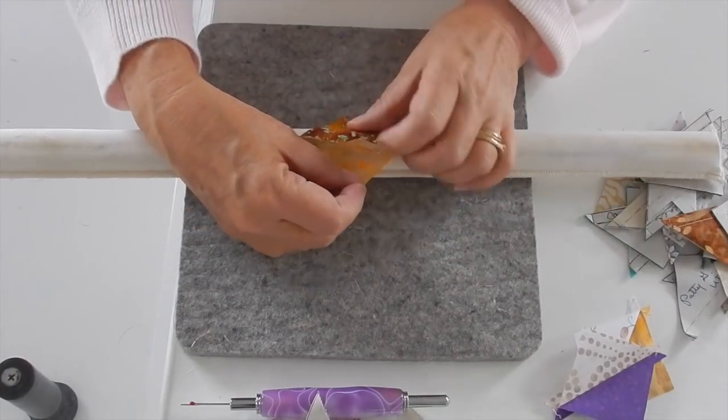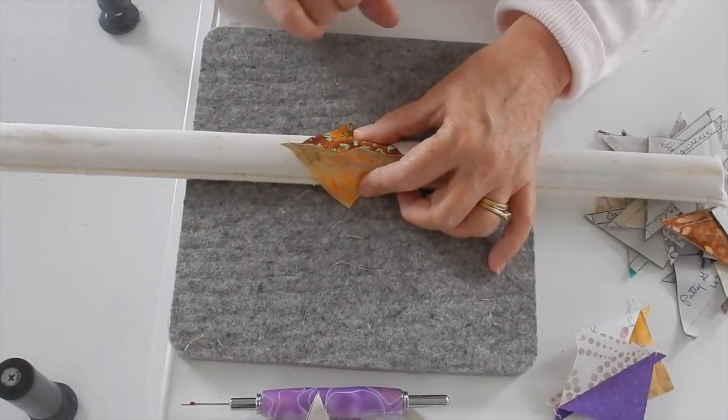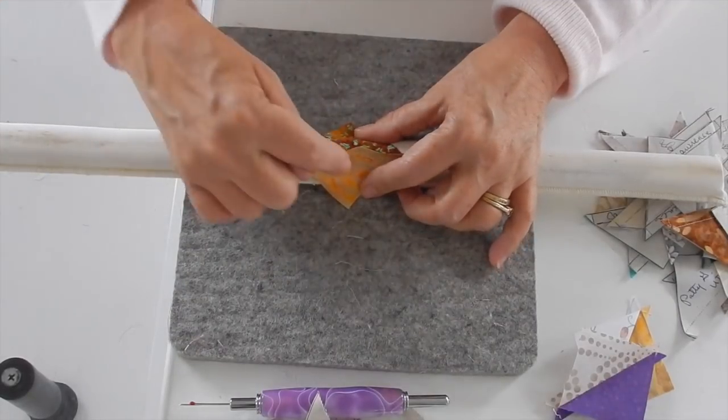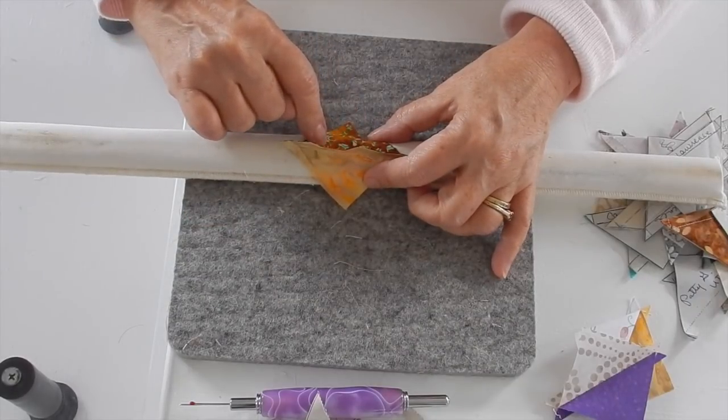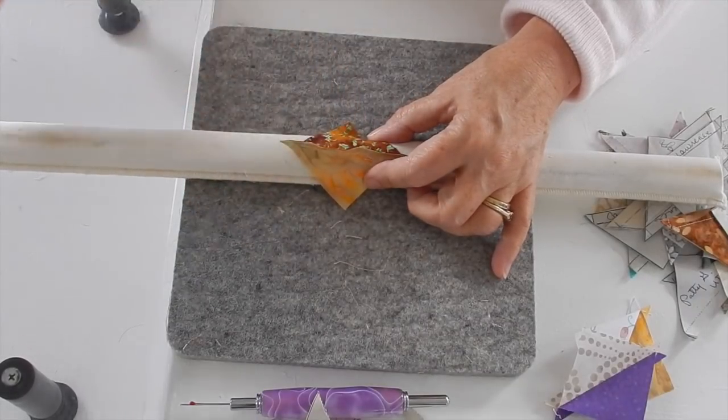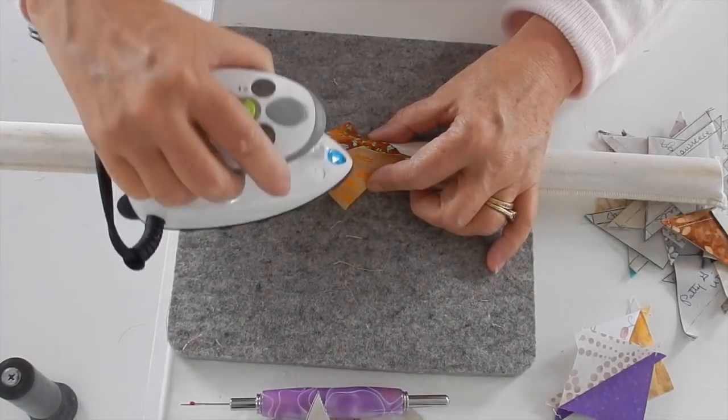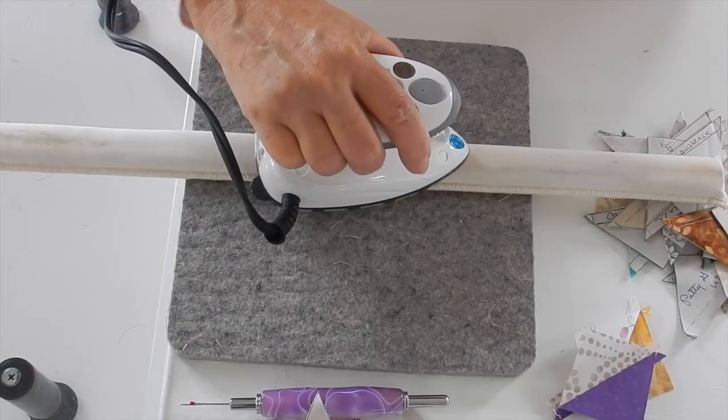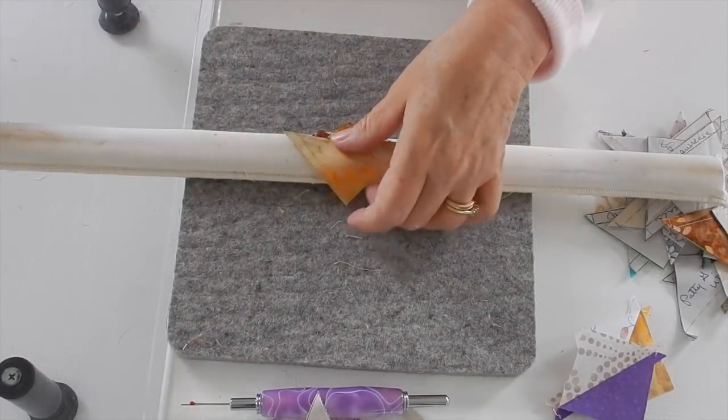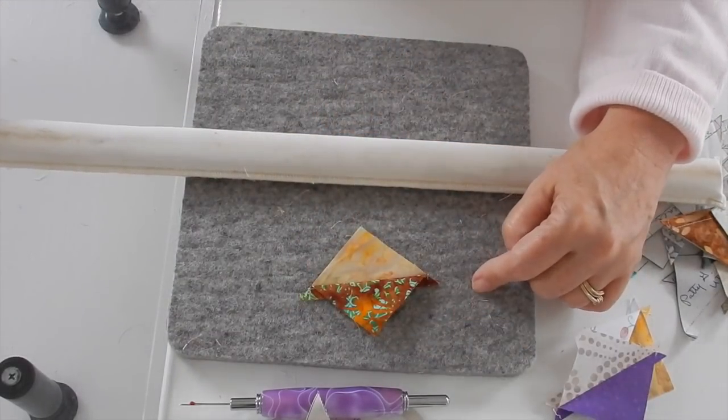Open it up and I'm going to press it to one side. Once you decide what side you're going to press it to. Either the background fabric, this is my background, or my focus fabric. On these I'm going to press it to my focus fabric. Pick up my iron and just run it over it just like that. And now I'm going to turn it over. And there it is. Very nicely pressed.